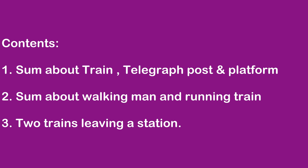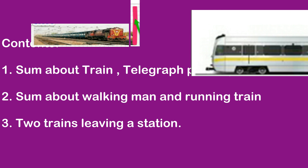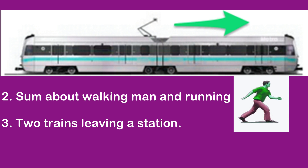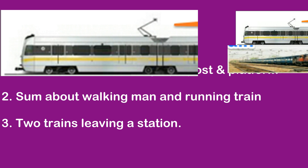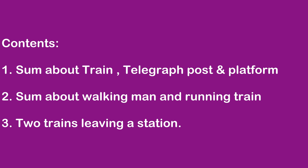Welcome to the third video in this series. We will discuss three problems on relative speed. The first involves a train passing a telegraph post and a platform. The second involves a man walking along a railway track while a train passes him in the same direction. The third involves two trains leaving a station at different times, where the faster train overtakes the slower one.